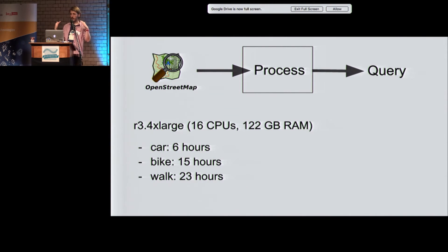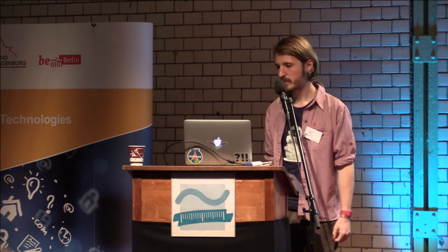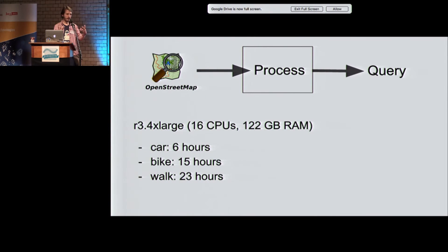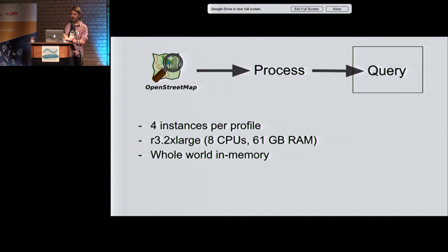There are far more paths in the world than streets you can drive a car on. We process this from OpenStreetMap data and throw it into our API servers. We run a full stack of API servers for each of the profiles — currently four instances per profile, running in different regions and different availability zones so the API never goes down.